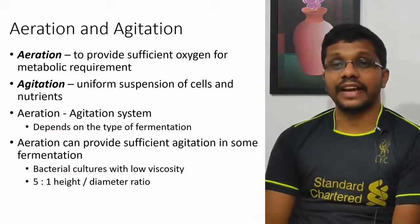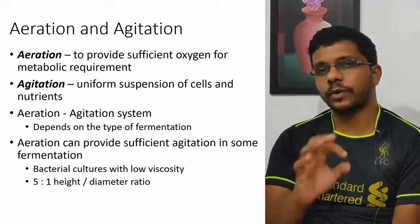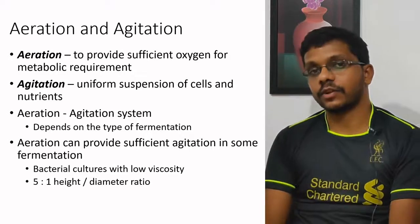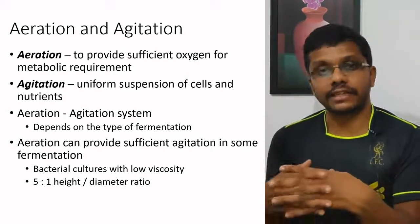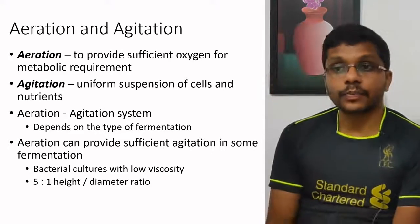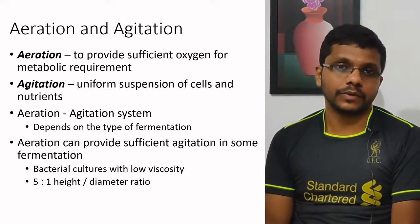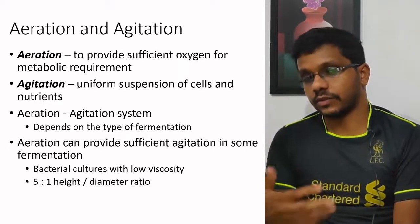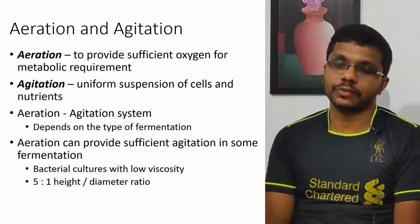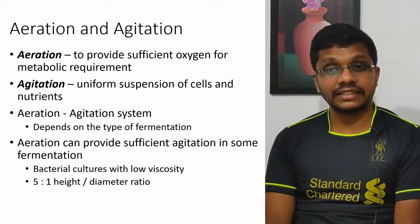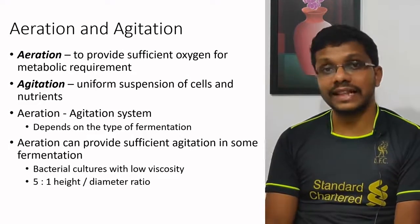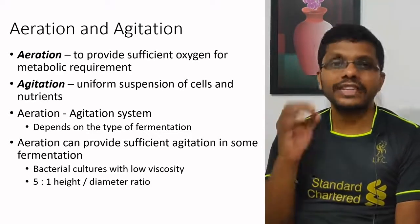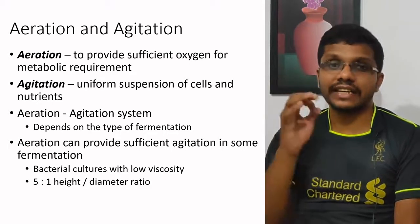Next is the aeration and agitation system, one of the most important systems in a fermenter. They are discussed together because in most cases they are used in an integrated manner. Aeration provides a continuous supply of oxygen for microbial metabolism. Agitation is used for the uniform suspension of cells and nutrients, and to prevent focal growth. So in a fermenter, we need continuous aeration and continuous agitation.